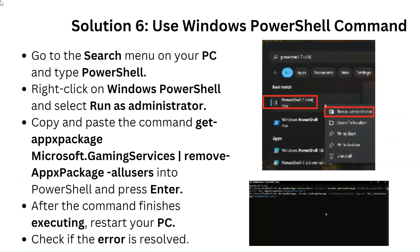Solution 6: Use a Windows PowerShell command. Go to the Search menu on your PC and type PowerShell. Right-click on Windows PowerShell and select Run as Administrator. Copy and paste the command Get-AppxPackage Microsoft.GamingServices | Remove-AppxPackage into PowerShell and press Enter. After the command finishes executing, restart your PC and check if the error is resolved.